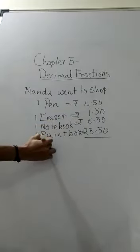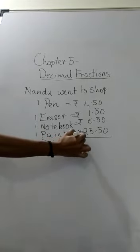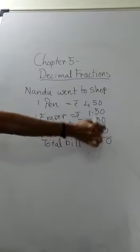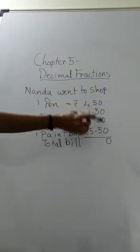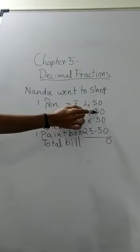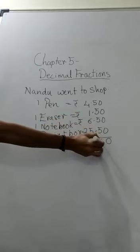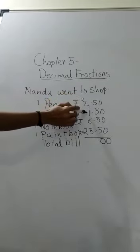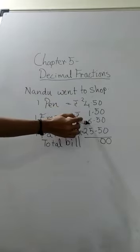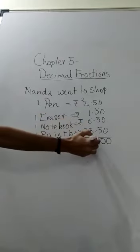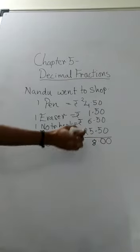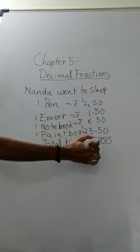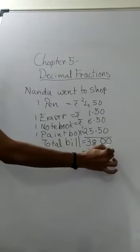So let us find the total bill. You are going to do addition of decimals. It is the same as addition of numbers. You add the 0s: 5 plus 5 is 10, plus 5 is 15, plus 5 is 20 — write 0 and carry 2. Then 4 plus 2 is 6, plus 7 is 13, plus 5 is 18 — write 8 and carry 1. Then 2 plus 1 gives 38. So the total bill is 38 rupees.